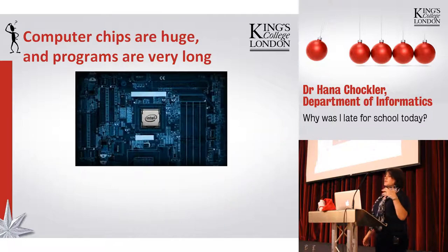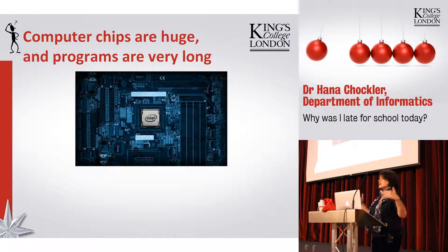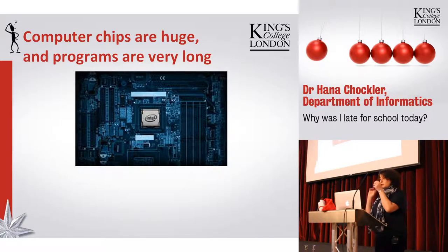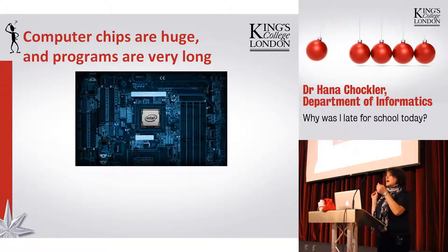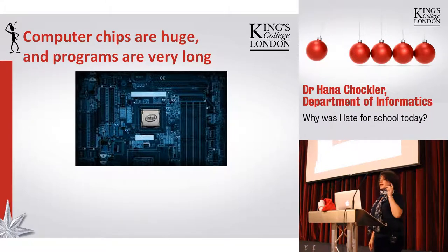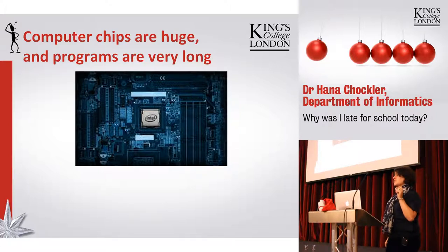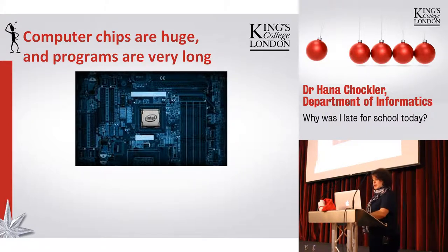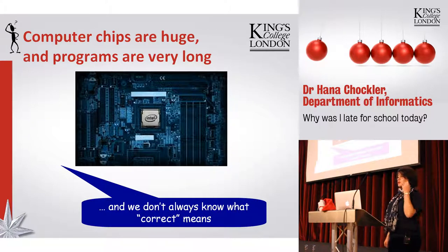First of all, it's difficult because all those systems are huge, and they're getting larger and larger every single day. This is an example of a chip — you can see how complicated all the wiring is. Computer software programs are enormous. But surprisingly, another reason it's so hard to check correctness is because we don't always know what 'correct' means.